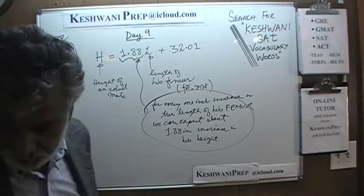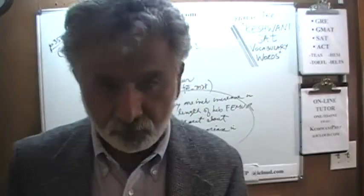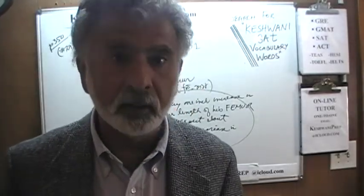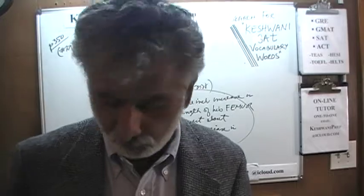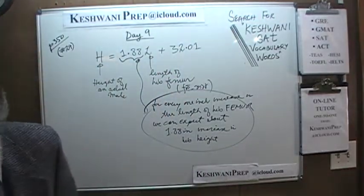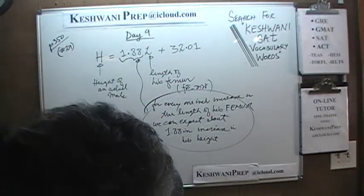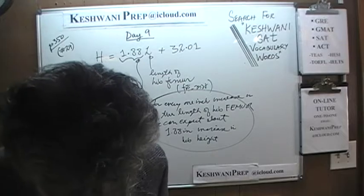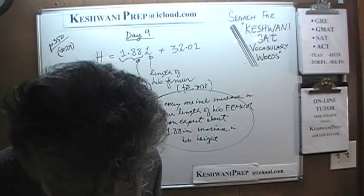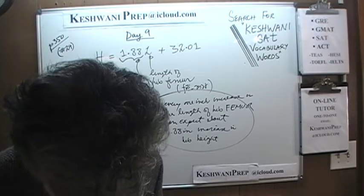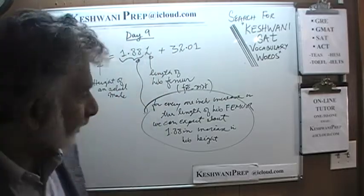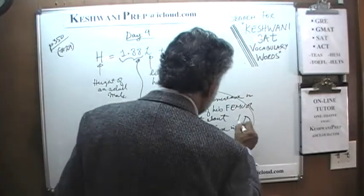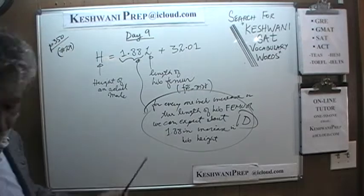That is your intercept — apparently that is the average height of a male when he is born. So that was it. Just pick the answer that comes closest to it. It says the approximate increase in men's height in inches for every 1 inch increase in his femur. There you go, that is answer D. What we wrote down here is basically the same as what you will find in D.